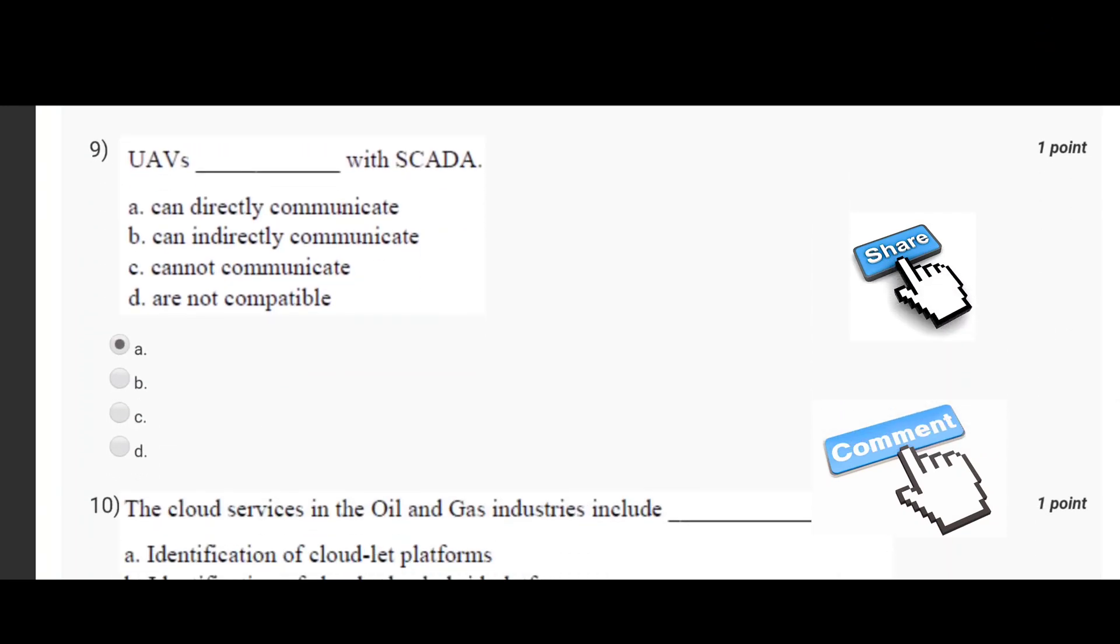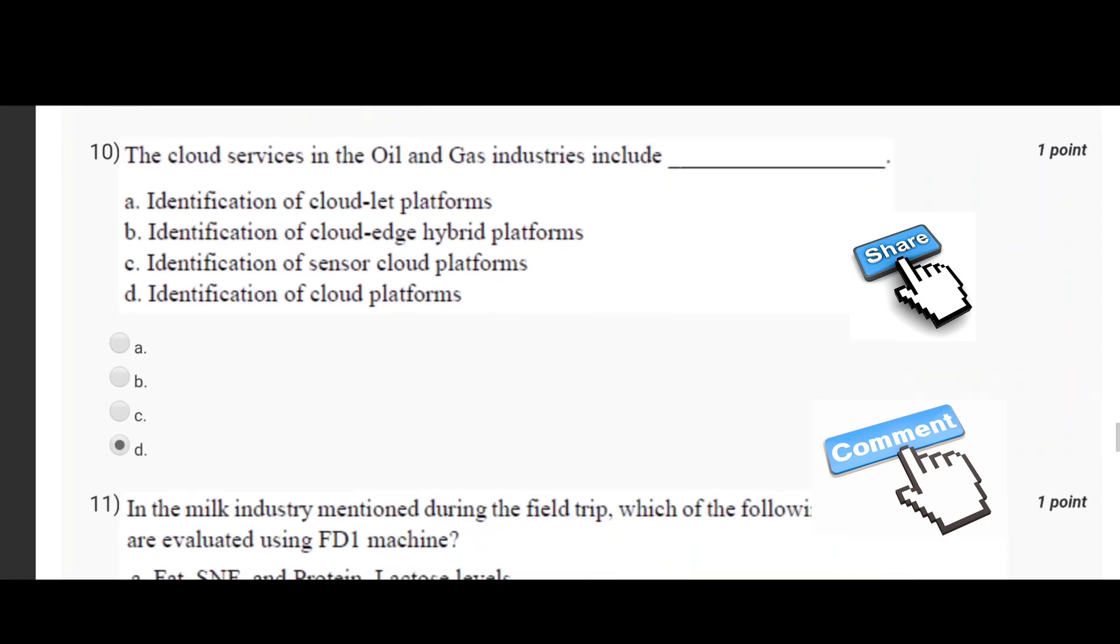Our ninth question is UAVs dash with SCADA. Correct option is A, can directly communicate. Our tenth question is the cloud services in the oil and gas industries include. Correct option is D, identification of cloud platforms.